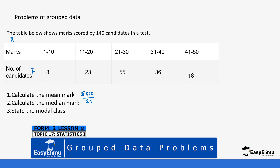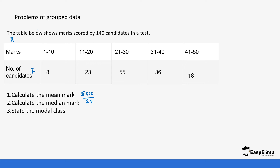I'm going to introduce another column for the midpoints x. We add the class boundaries: 1 plus 10 gives 11, divided by 2 gives 5.5. Then 11 plus 20 gives 31, divided by 2 gives 15.5. Then 21 plus 30 gives 51, divided by 2 gives 25.5. Then 31 plus 40 gives 71, divided by 2 gives 35.5. Finally, 41 plus 50 gives 91, divided by 2 gives 45.5.